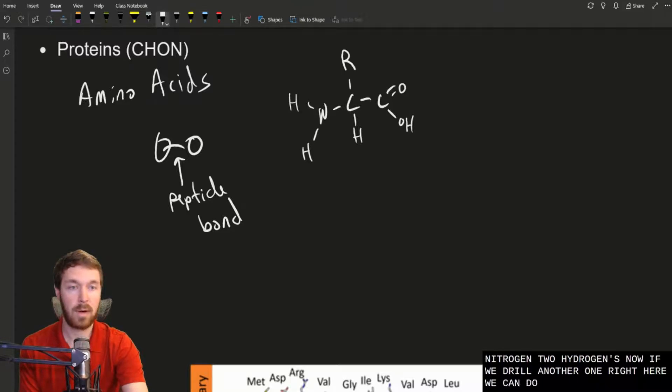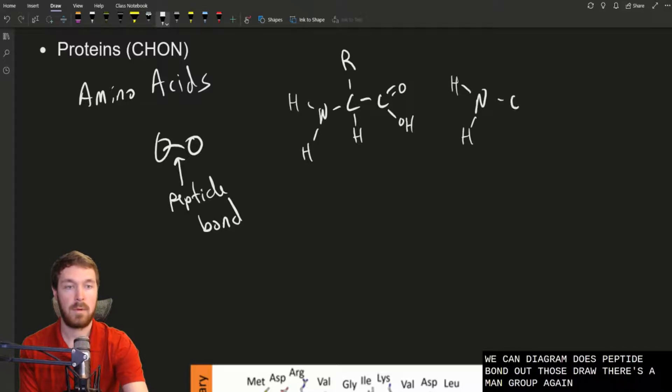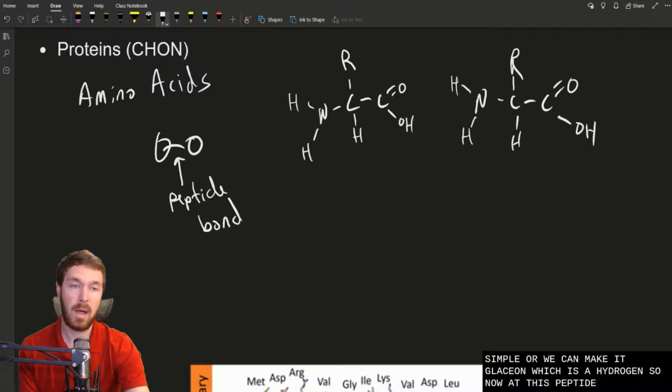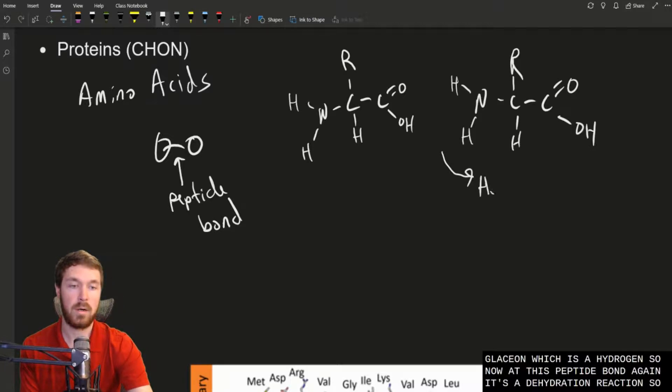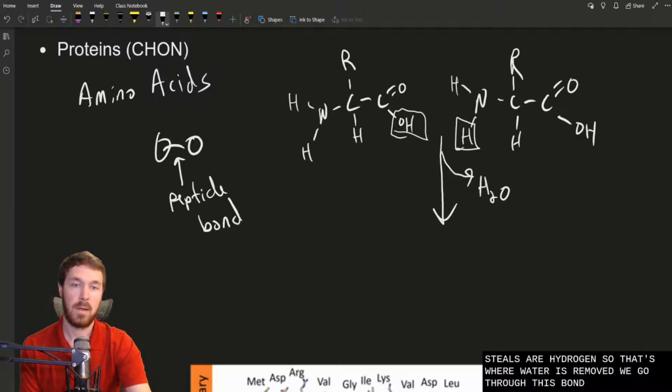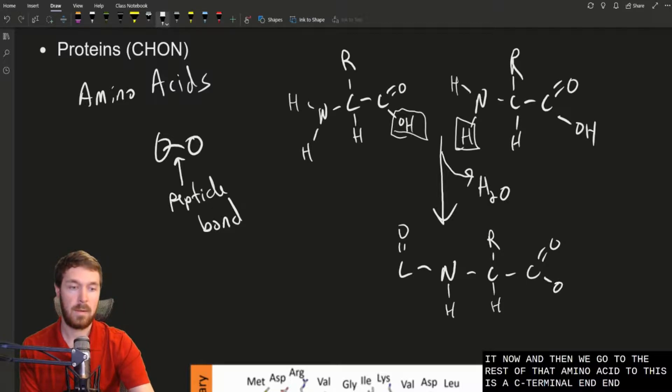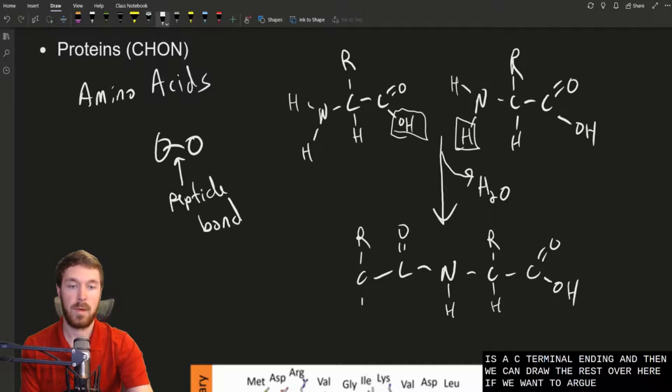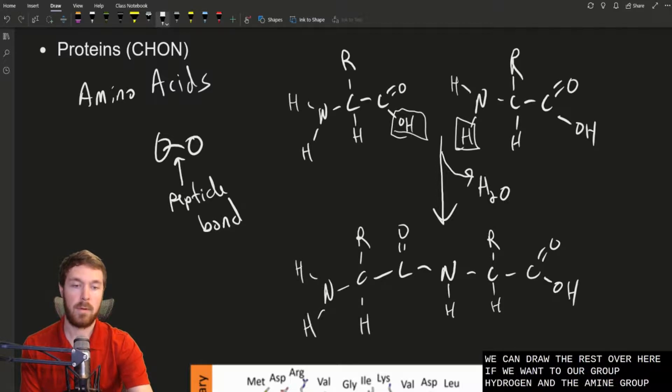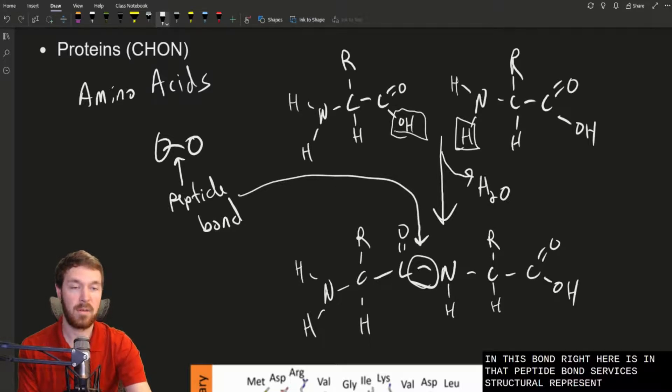If we draw another one right here, we can diagram this peptide bond out. This peptide bond is a dehydration reaction. So water is going to be removed in this bond. And it actually steals it from right there. It steals that hydrogen. So that's where water is removed. We go through this bond, and then we can draw it out. There is the double bond oxygen. This bond comes over to that nitrogen. We have a hydrogen coming off of it now. And then we go to the rest of that amino acid. This is the C-terminal end then. And then we can draw the rest over here. So that's the R group, hydrogen, and the amine group. So then this bond right here is the peptide bond. There's a structural representation of forming a dipeptide.